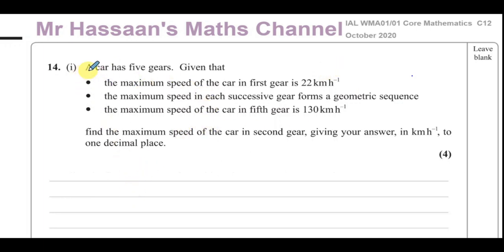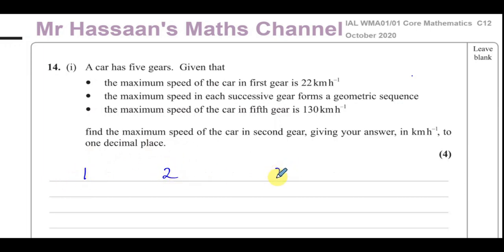Question 14 part 1 tells us about a car that has five gears. The maximum speed in first gear is 22 km per hour, and the maximum speed at each successive gear forms a geometric sequence — we multiply by the same amount each time to get to the next term. The maximum speed in fifth gear is 130 km per hour.